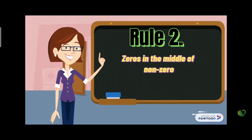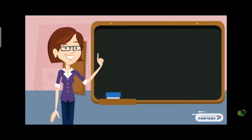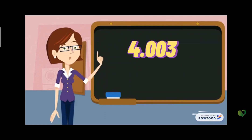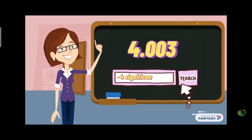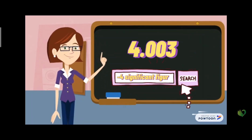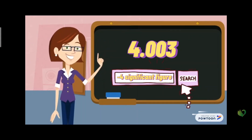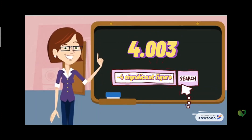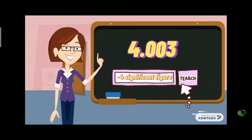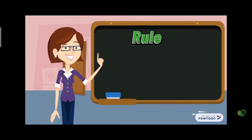Rule number two: zeros in the middle of non-zero numbers are significant. For example, 4.003 has four significant figures. These two zeros are in the middle of 4 and 3, which are two non-zero numbers, so every single digit counts as significant.